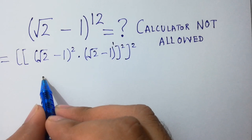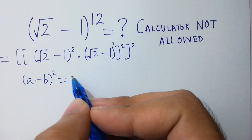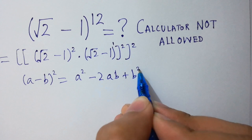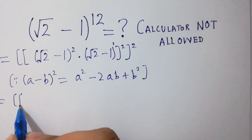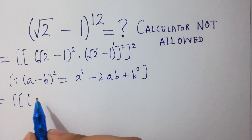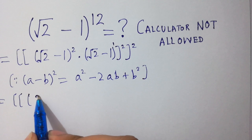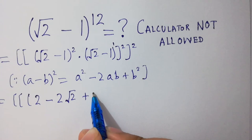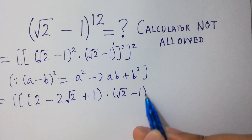Here, since (a minus b) whole square equals a squared minus 2ab plus b squared, square root of 2 minus 1 squared will equal square root of 2 squared — the square cancels from the square root — giving us 2 minus 2 times square root of 2 plus 1, which simplifies to 3 minus 2 square root of 2.